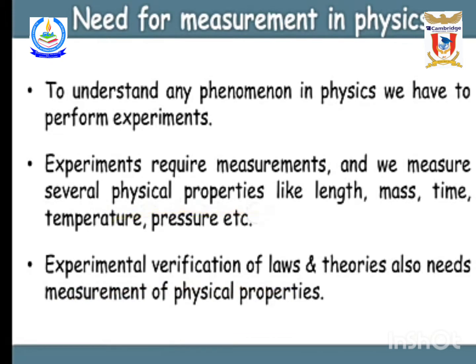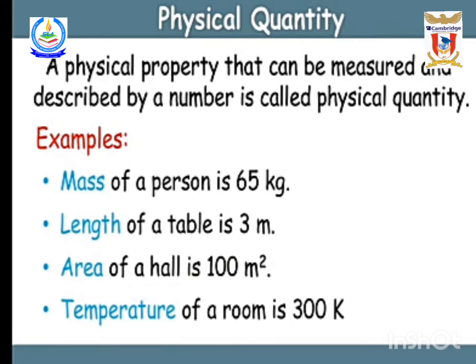So what are physical properties or physical quantities? Length, mass, time, temperature, pressure — these are physical quantities. A physical property that can be measured and described by a number is called a physical quantity. So any quantity or property that can be explained, described, or measured by a number.